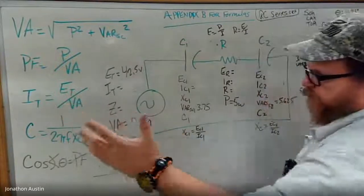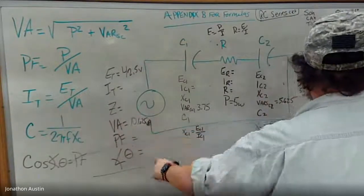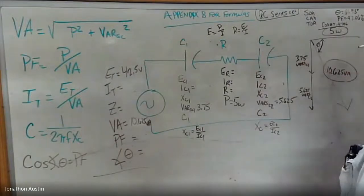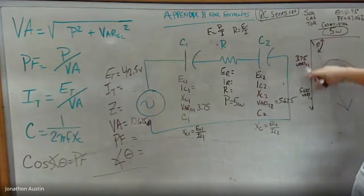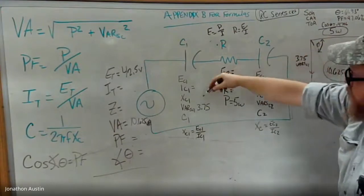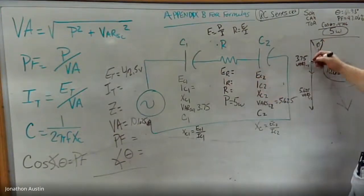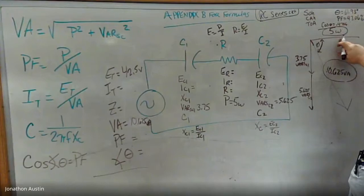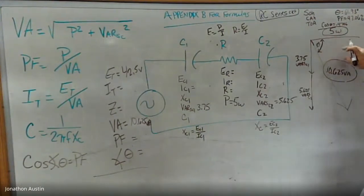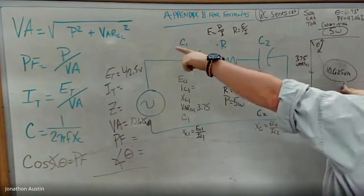I note it as volt amps, other people don't, but that's how I prefer to note it so I know what I'm looking at. So the way you get this is it's on the triangle using the Pythagorean theorem, A squared plus B squared equals C squared. You add these two together, that gives you your total VARs for those two, and then using your power and A squared plus B squared equals C squared gives you your volt amps.